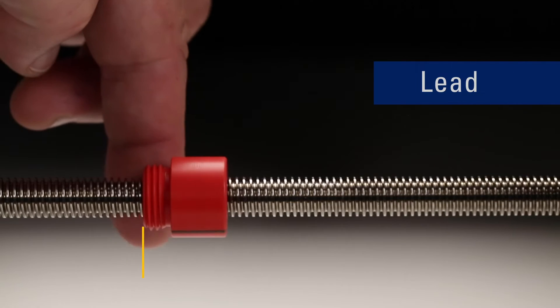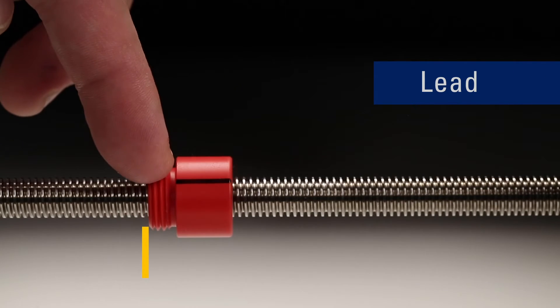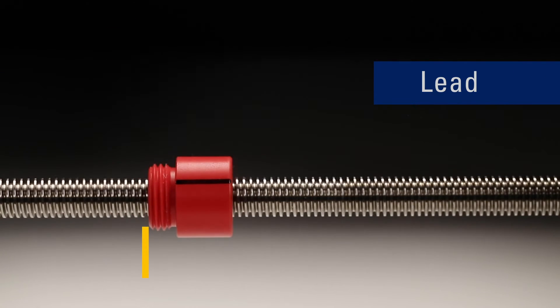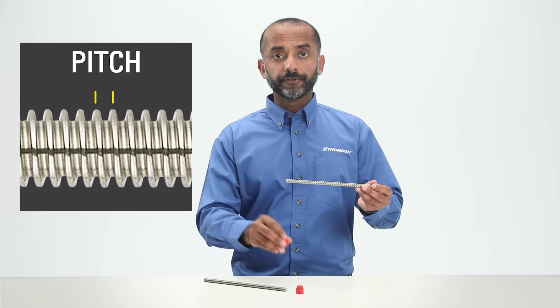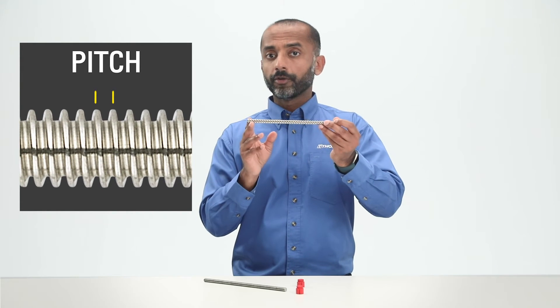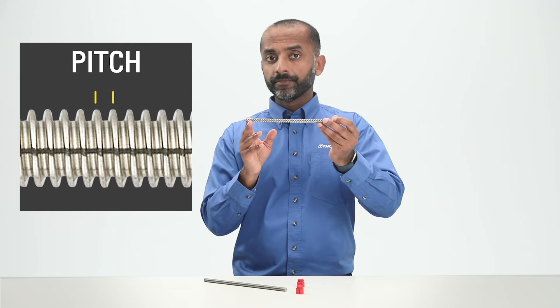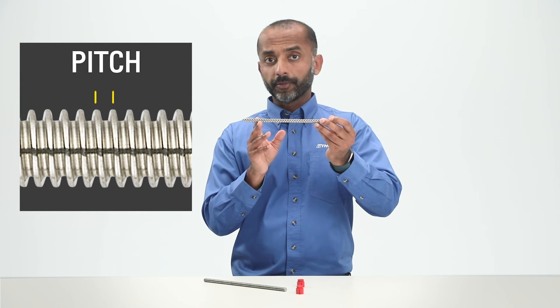The start, lead, and pitch are all important attributes of any lead screw. The lead is the distance the nut travels with one revolution of the screw. The pitch is the physical distance between any point on one thread and the same point on the next thread. A lead screw can have multiple threads running up the screw, which will result in the lead and the pitch not being the same.